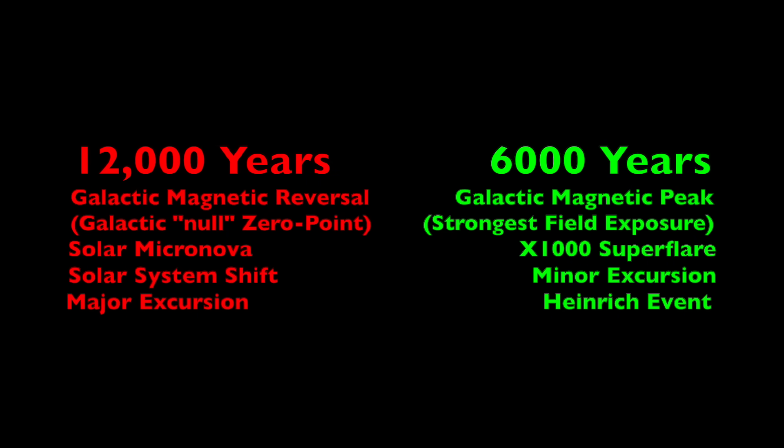Zero galactic magnetism versus peak galactic magnetism. No surprise, they both impact Earth's magnetism, but they have opposing impacts on the sun. So as simply as it can be stated, the 12,000-year event is the galactic magnetic reversal, the zero point creating the solar micronova, which is how you get the flash burning, by the way. It has the solar system magnetic shift and the major geomagnetic excursion and extinction level event.